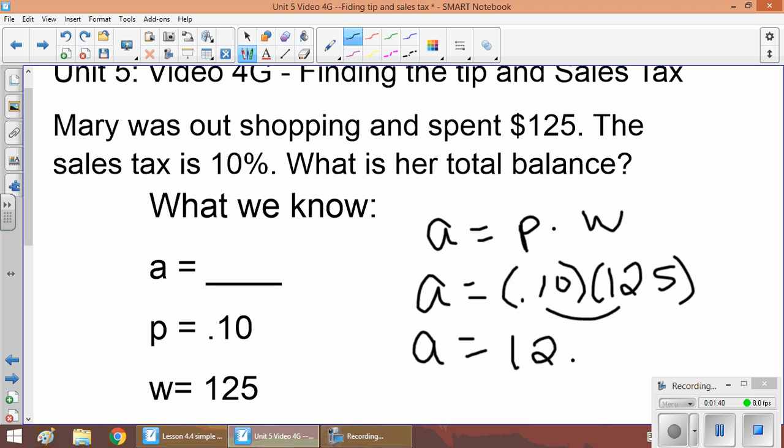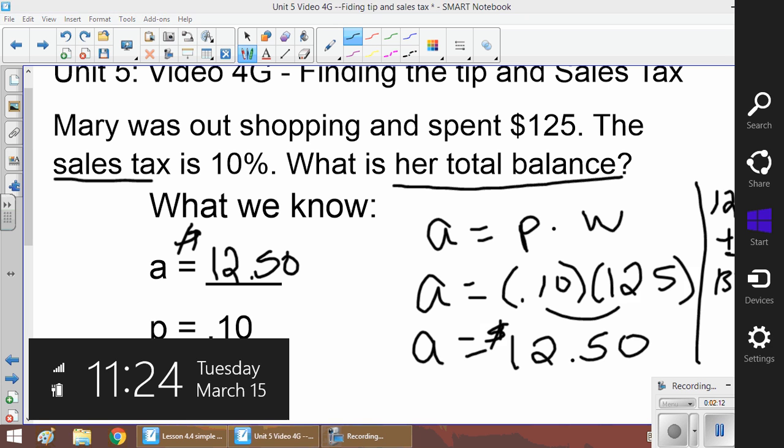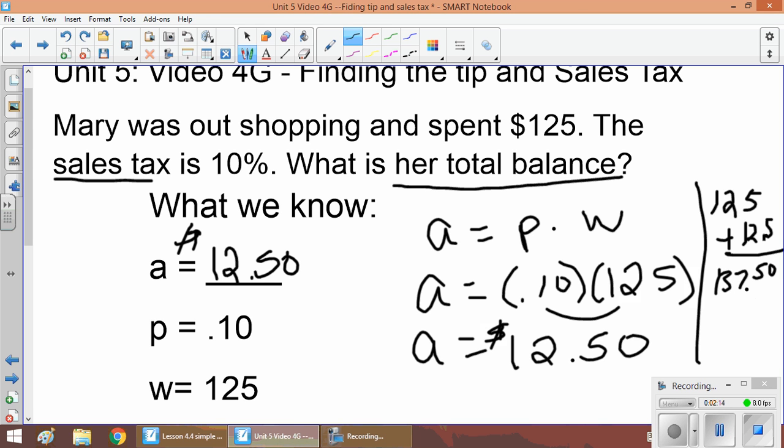So the fine, and that's the tip—the tip is $12.50. Where's the sales tax? Yeah, sales tax. So the tax that you'll pay is an extra $12.50. To find her total balance, what we're going to do is take 125 and add 12.50 to this. We get 137.50. So her total balance is $137.50.